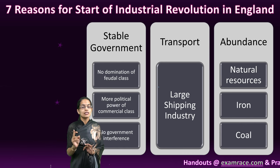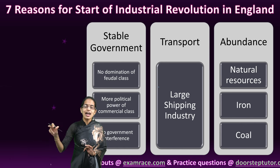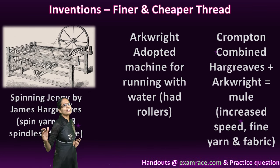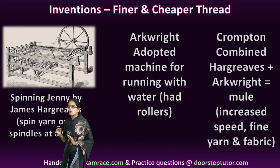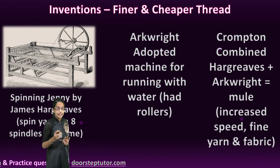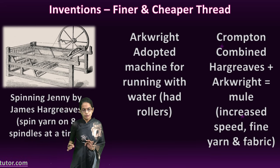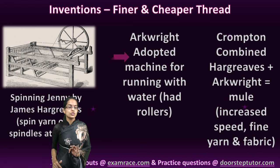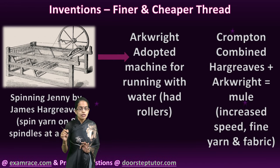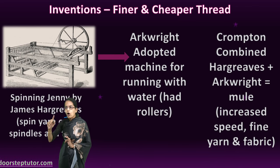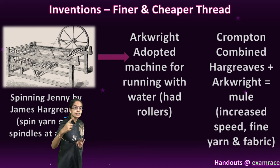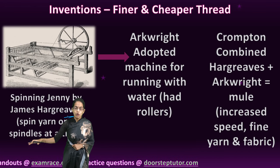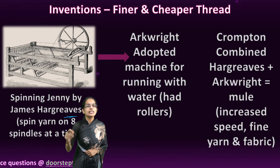Other nations did not have these advantages — some lacked natural resources, abundant iron and coal, capital, or labor, and a stable government. All these things were fulfilled by England, and therefore England was the region where the Industrial Revolution started. Whenever a revolution takes place, it is tied with numerous inventions. The first was in cotton manufacturing of textiles. The first invention was a spinning jenny, discovered by James Hargreaves, which could spin yarn on eight spindles at a time.